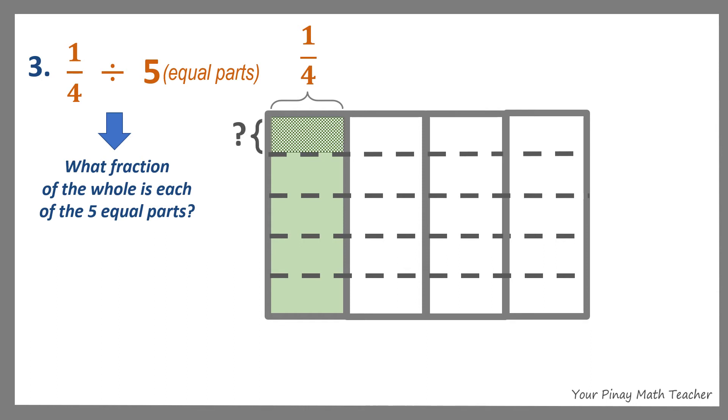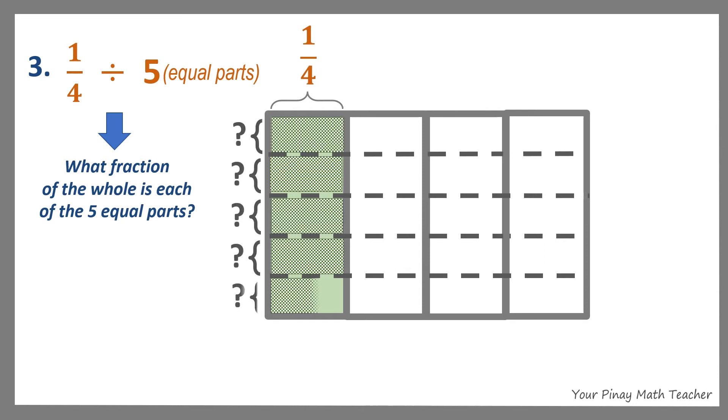Each equal part is the same as 1 out of 5, or 1 fifth, of the shaded part 1 fourth. By counting, 1 fifth of 1 fourth is just 1 out of the 20 equal parts.